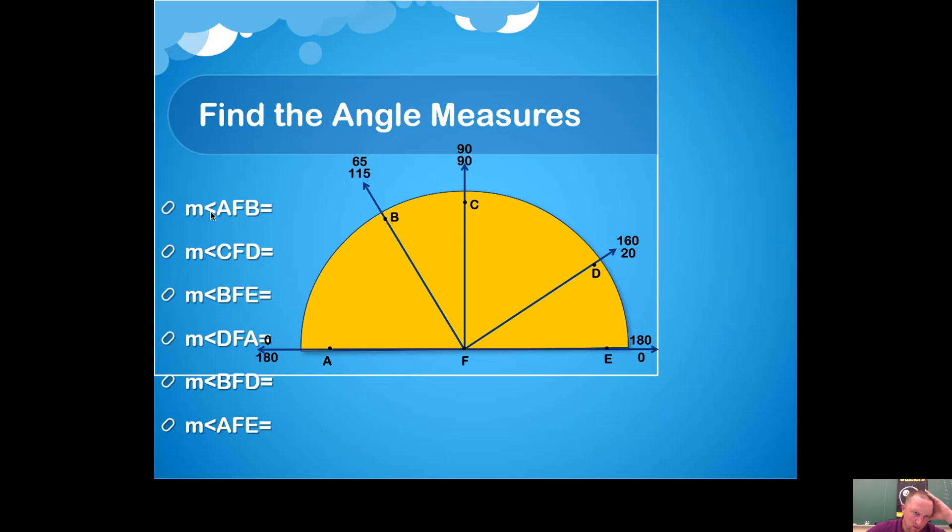We're going to look for the measure—that's what this little m means—of angle AFB. Find angle AFB. Trace it with your finger or your pencil. We need the measure of it. How many degrees are in between these two rays? Well, if you look at the top numbers, we have a zero and we have a 65. The protractor postulate tells you to just take those values, zero and 65, and subtract them.